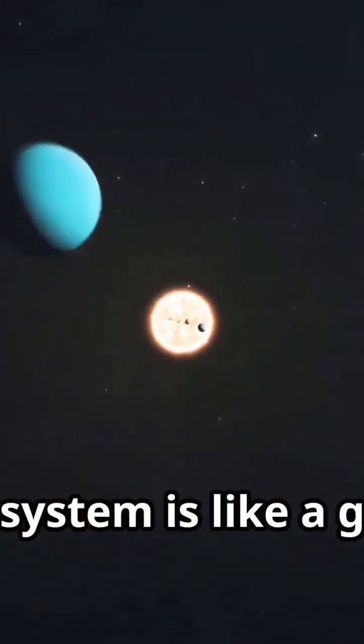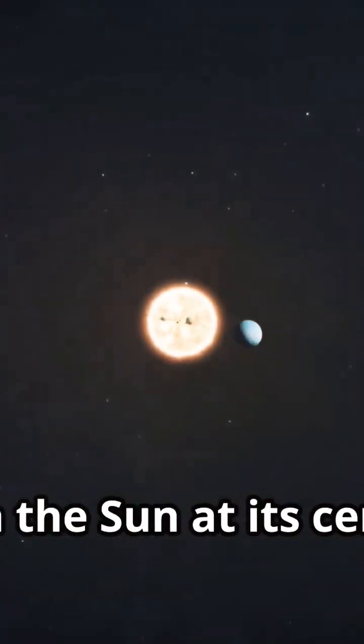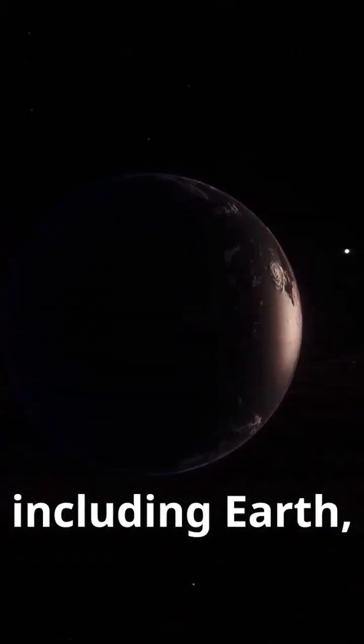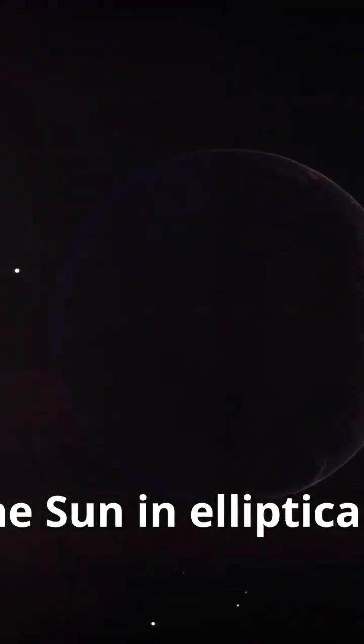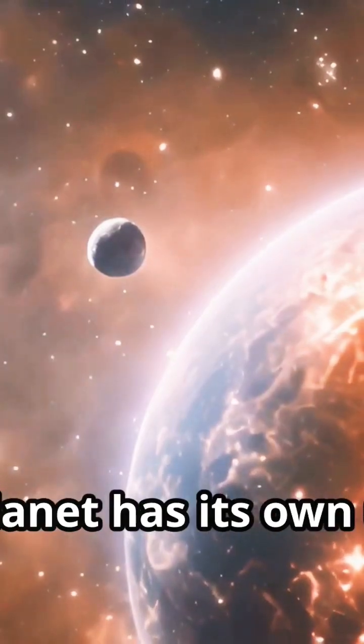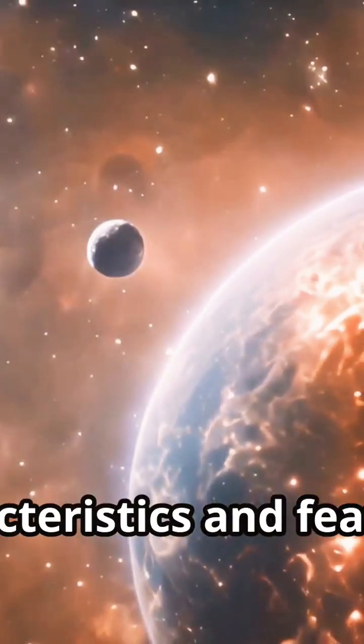Our solar system is like a giant family with the Sun at its centre. Eight planets, including Earth, orbit the Sun in elliptical paths. Each planet has its own unique characteristics and features.